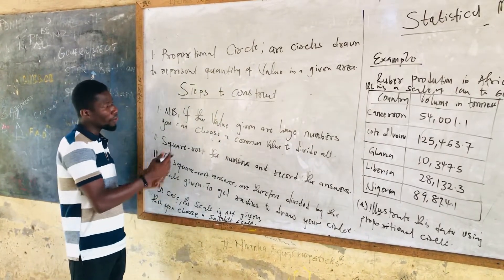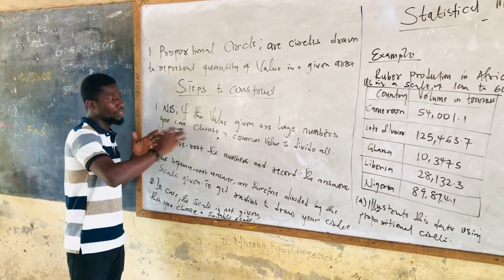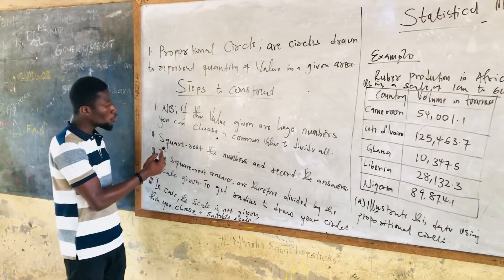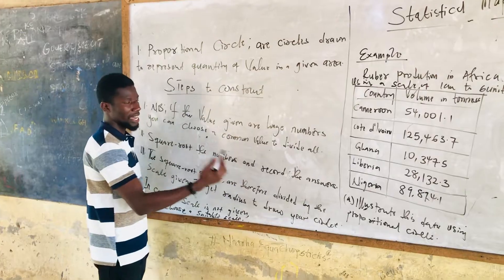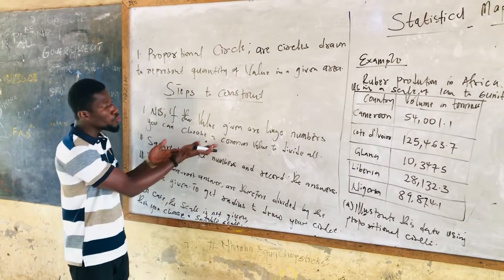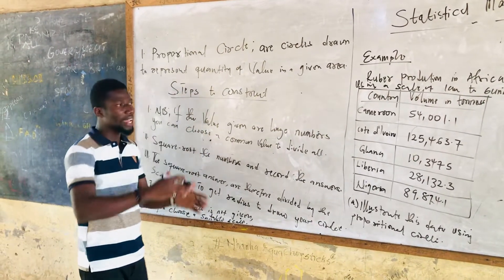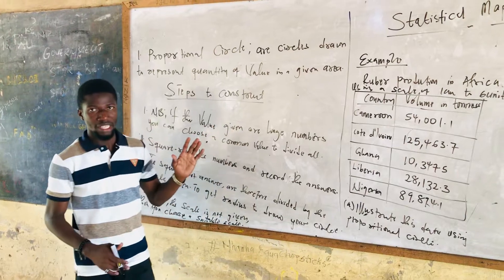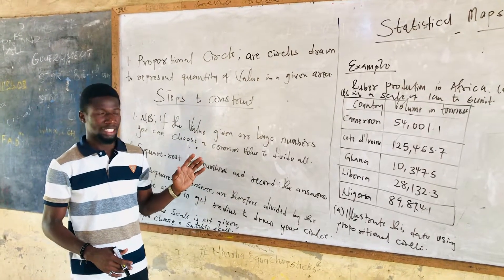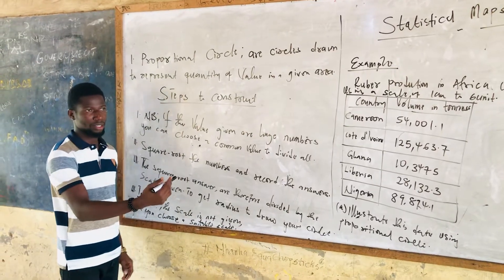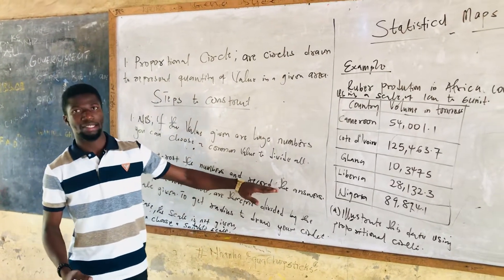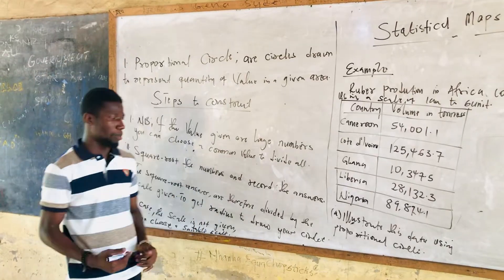The second step: after you choose the common value to divide through, then you square root the number and record the answers. So after you have used the common value to divide all the values given to us by the question, the result that we get, we are going to square root all the results and record our answers.